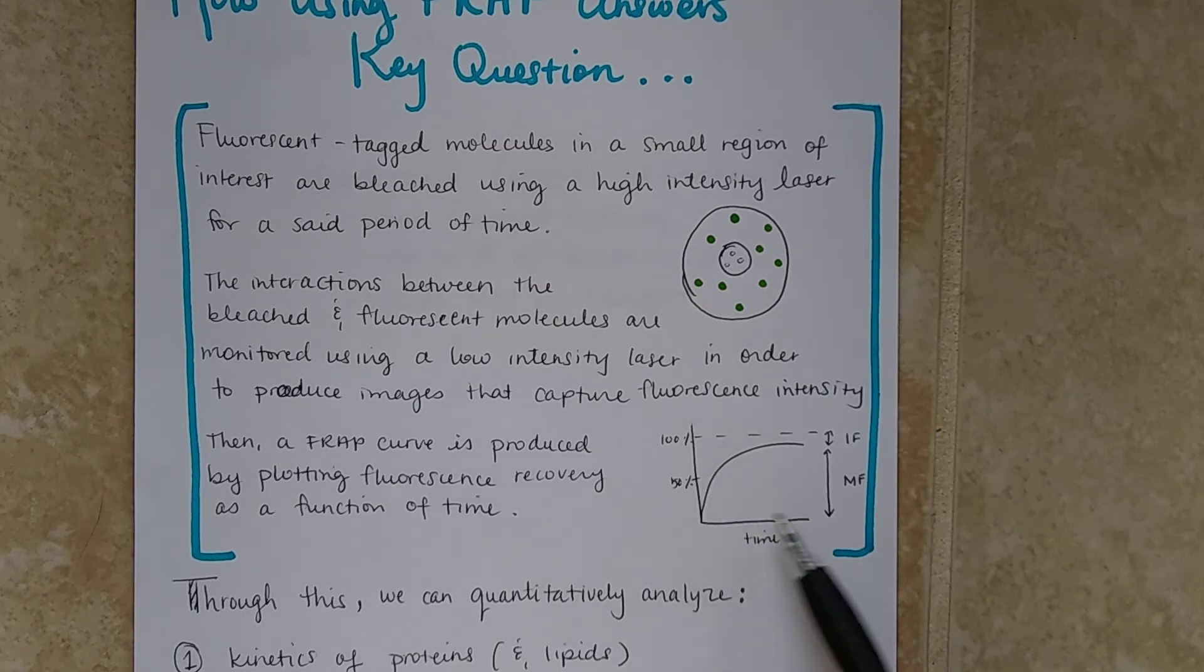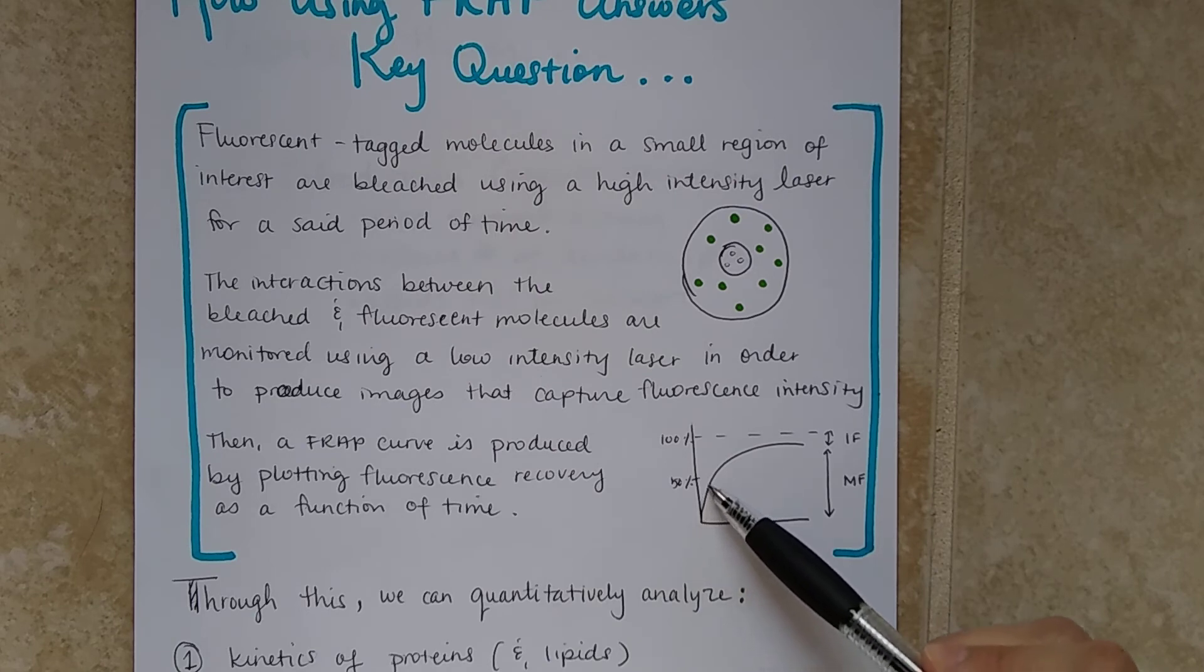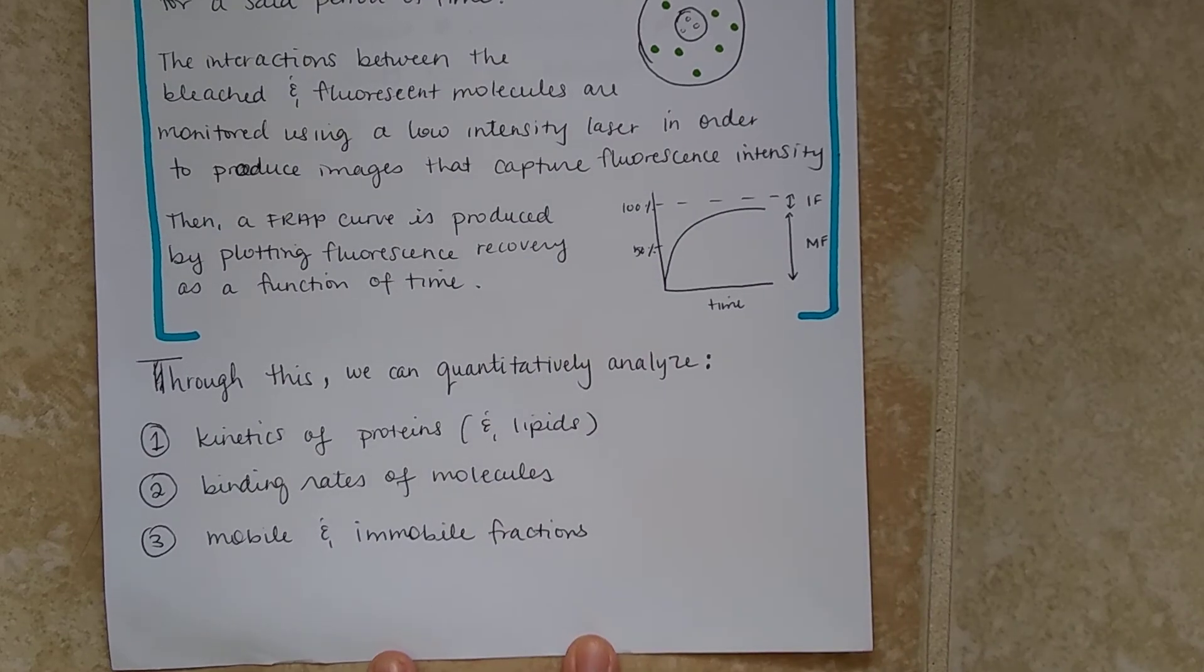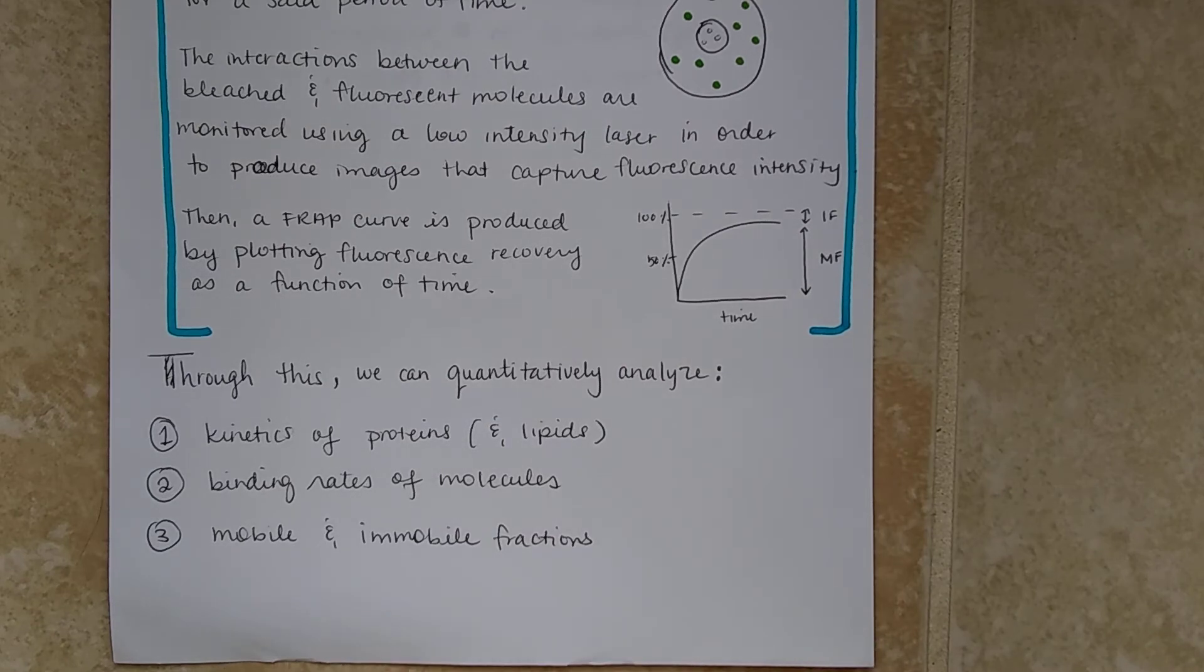Then a FRAP curve is produced by plotting fluorescence recovery over a function of time. And as we said here, it will begin to experience the recovery of the fluorescence. So what are the major conclusions that can be seen through FRAP?